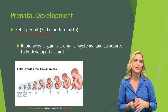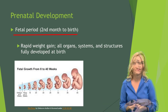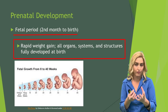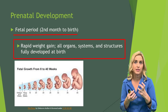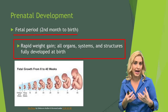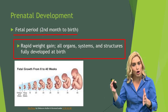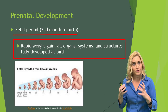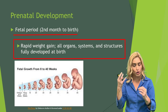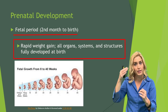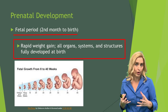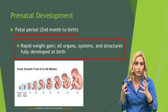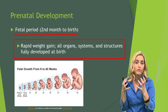The fetal period is from the second month all the way to birth. This is where we see a lot of rapid weight gain. All of the organs are formed during this period, and the systems and structures are fully developed at birth. So from week eight all the way to week 40, this is when things are growing and developing. Most of the energy and resources will go into forming the brain as well as the spinal cord. When we are born, the head is the largest part of the baby because most of the resources have gone into forming the brain.